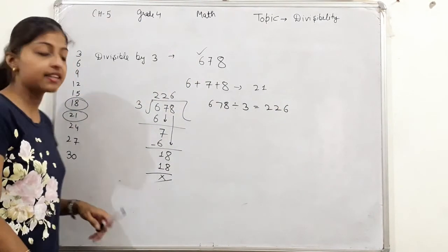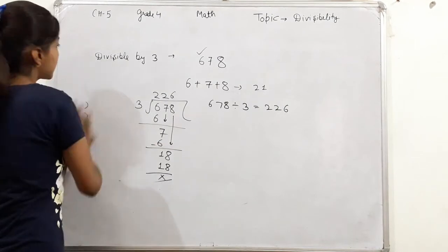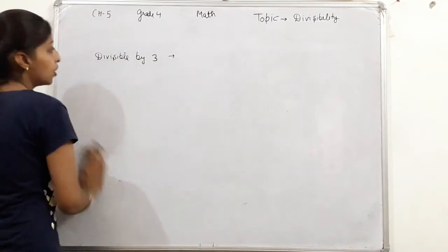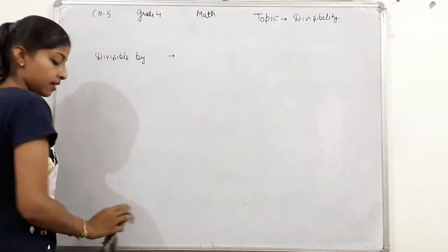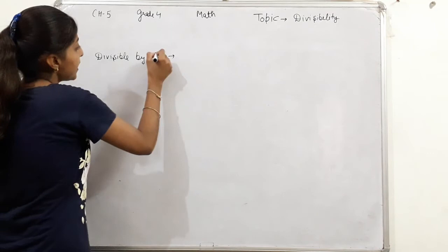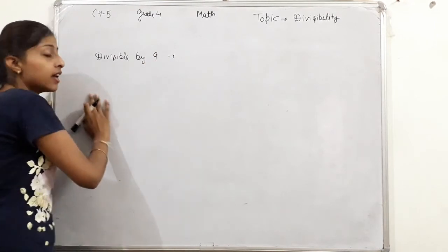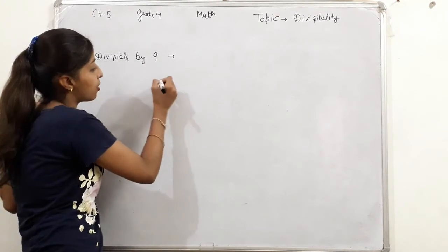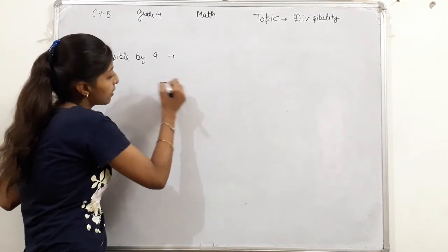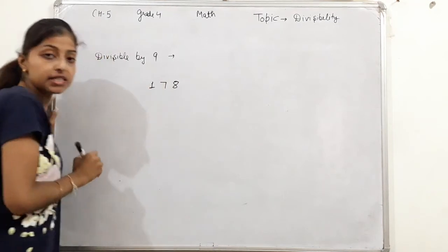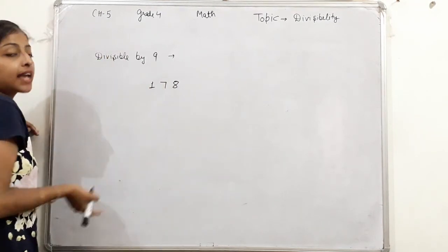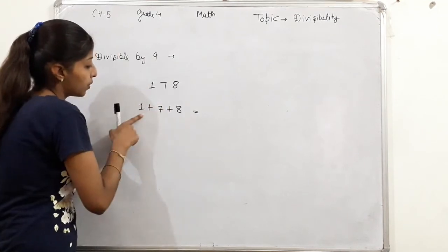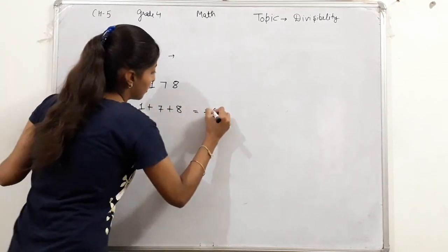Now let's talk about the same for number 9. Its test - what do you need to do? Same procedure for 9. What to do? Sum the digits and check if it comes in the table or not. 178 - we'll sum the digits: 1 plus 7 plus 8.